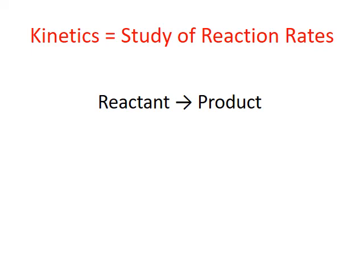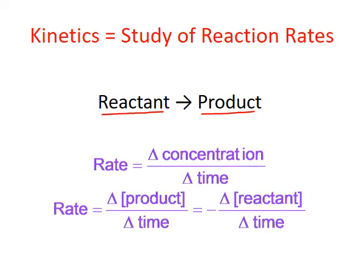We want to define how we actually measure rate for a chemical reaction — how quickly it's actually occurring. We'll consider a simple reaction in which one reactant changes into one product. How do we measure how quickly that change is happening? The easiest way is to measure the change in the concentration or amount of either the product or the reactant.